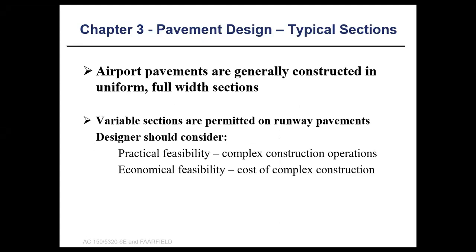Airport pavements are generally constructed in uniform, full-width sections. This applies to all pavements such as aprons and taxiways. However, variable sections are permitted on runway pavement where practical feasibility, complex construction operations, and economical considerations apply. If the construction process would be too complex and more costly than the savings gained, you can use a uniform section.